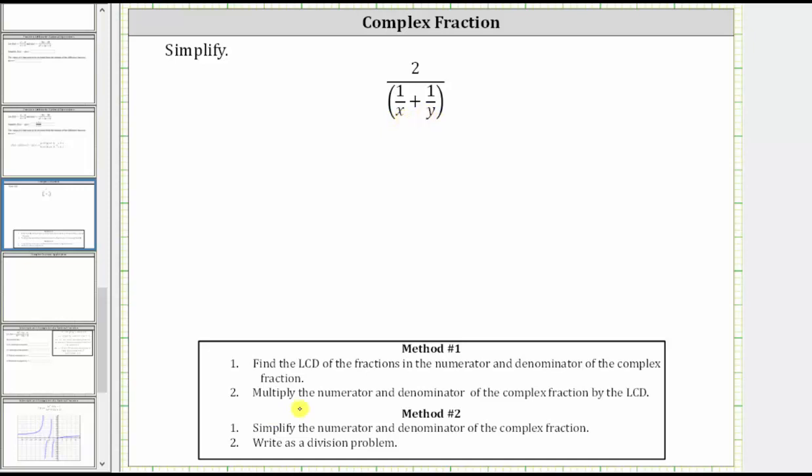Step two is to multiply the numerator and denominator of the complex fraction by the LCD, which means you multiply both the top and bottom by xy. This will create an equivalent rational expression.